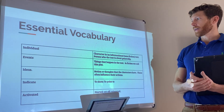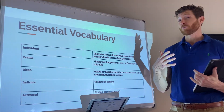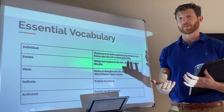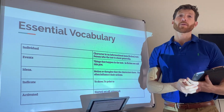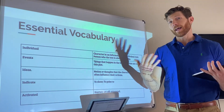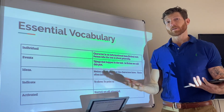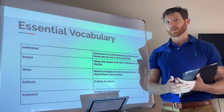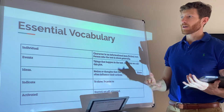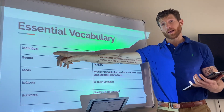An individual is a character in an informational text, usually the person who the text is generally about. Today we're going to be reading two biographies, which are the life stories of two different characters written by somebody else. So in these biographies, we're going to really be able to focus on the individuals.